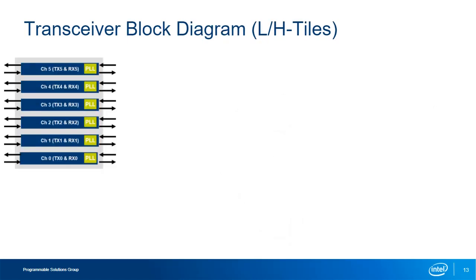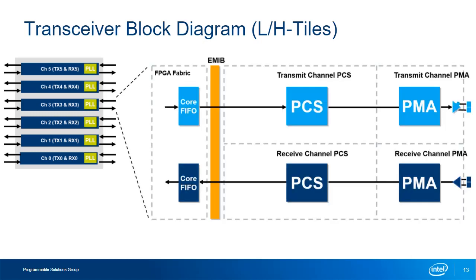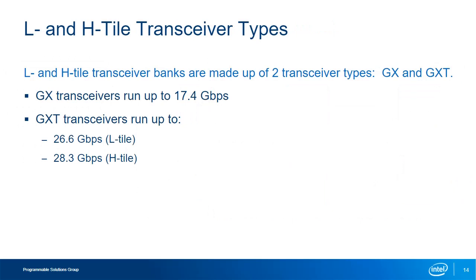Within each L and H tile transceiver channel you will find a pair of transmit and receive channel paths. The transmit path is on the top and the receive path on the bottom of the channel diagram. These two paths can operate in full-duplex mode supporting the same protocol, or in simplex mode where the two channels are fully independent supporting two completely different interfaces or protocols sharing the same transceiver channel space. There are two types of transceiver channels: GX channels running up to 17.4 Gbps NRZ, and GXT channels running up to 26 Gbps NRZ on L tiles and up to 28 Gbps NRZ on H tiles.